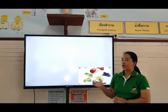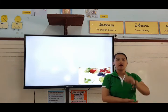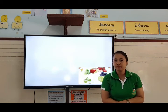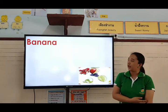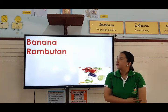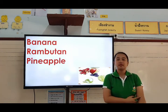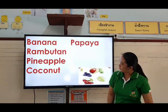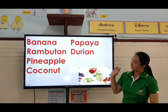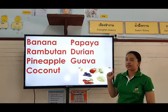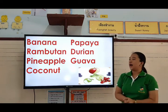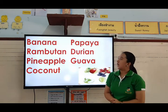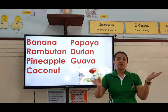Okay, so now let's try to review the fruits that we have learned one by one. What is the first fruit? It's the banana. Very good. What else? We have the rambutan. What else? Pineapple. And coconut. What else? We have papaya. Durian. And the last one is guava. Very good. Now, let's try to find out if these fruits are sweet or sour.